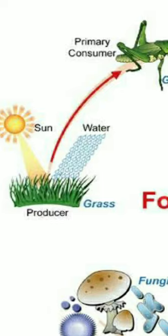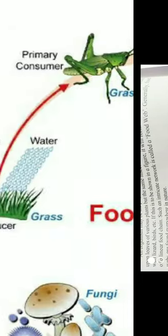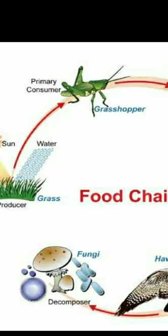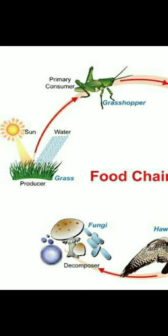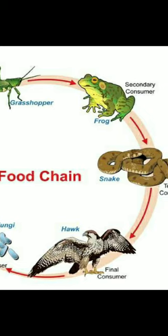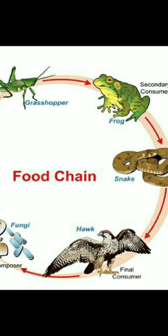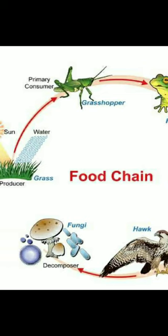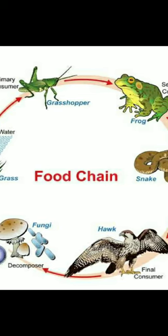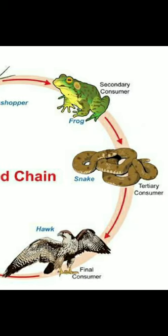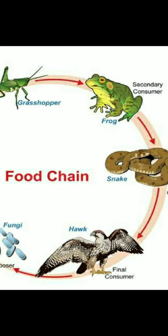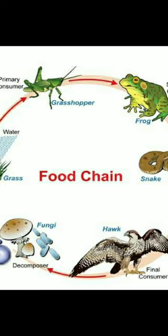Producers are consumed by primary consumers. A grasshopper is an example of a primary consumer. A frog is an example of a secondary consumer.